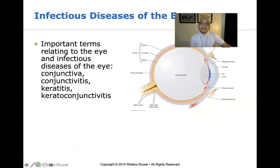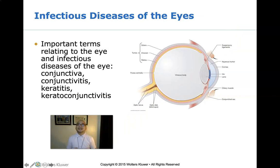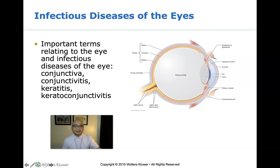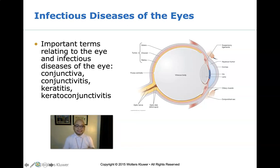Let us talk about the infectious diseases of the eyes. Several terms are related to eye infections. Conjunctiva is a loose connective tissue that covers the surface of the eyeball — called the bulbar conjunctiva — and reflects back from the inner layer of the eyelid, called the palpebral conjunctiva. This tissue firmly adheres to the sclera at the limbus, where it meets the cornea.